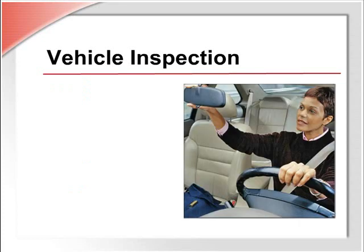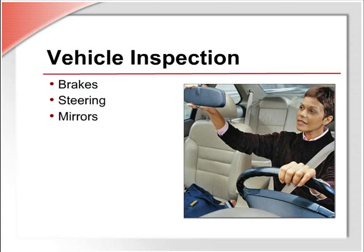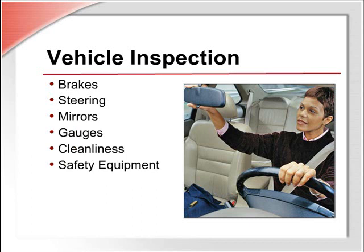The interior inspection will cover brakes — checked by putting the vehicle in gear without acceleration and applying the brakes. Steering wheels should have a full range of motion and effectively turn the front wheels. All mirrors must be present, unobstructed, and adjusted to the person who will be driving the vehicle. All gauges and indicators should be visually inspected to make sure they are operational. The interior of the vehicle should be free of any litter, food, or excessive dirt. Safety equipment such as a fire extinguisher, road triangles, and first aid kit should be in your vehicle at all times. Paperwork includes the vehicle registration, insurance paperwork, and accident report form.